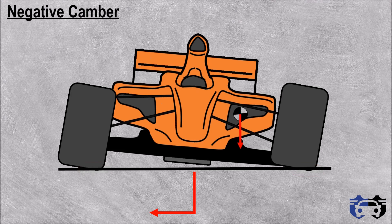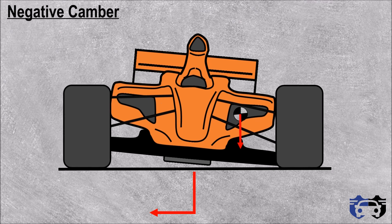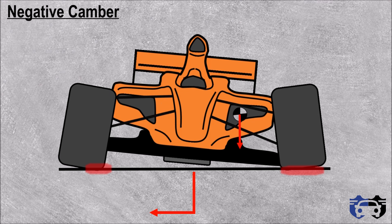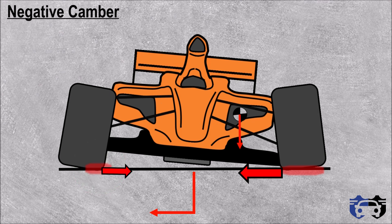The load on the outer tire is increased and we need to increase the traction on it. If we provide some amount of negative camber to the tire, the contact patch while turning will increase, which increases traction — and this is what we wanted. The inner tire contact patch does decrease to a greater extent, but that doesn't matter much because while turning, most of the weight is on the outer tire, so we can sacrifice some traction on the inner tire.